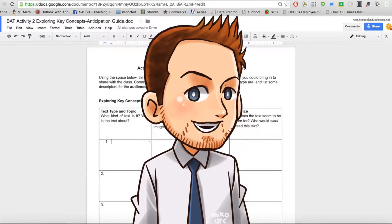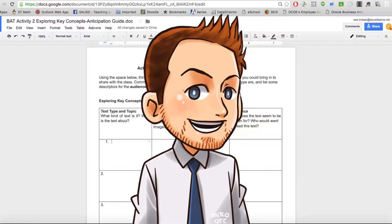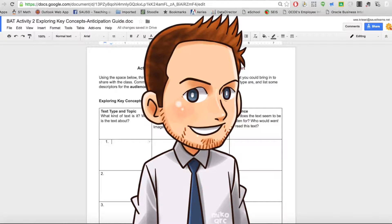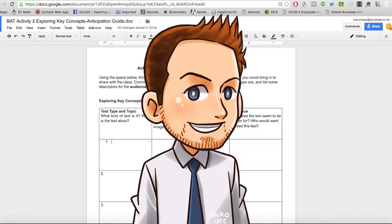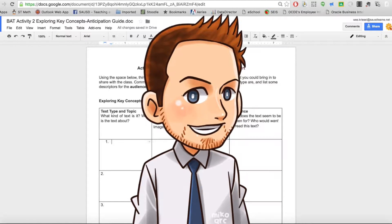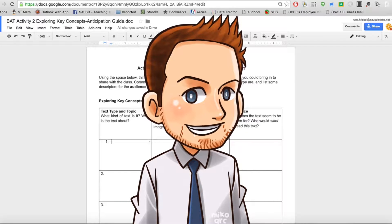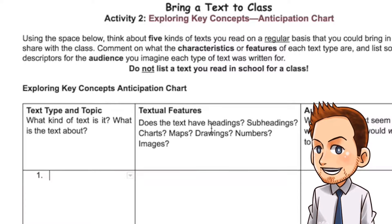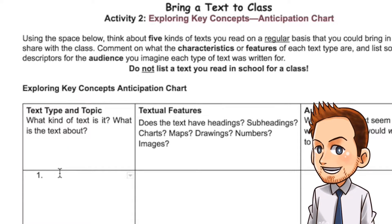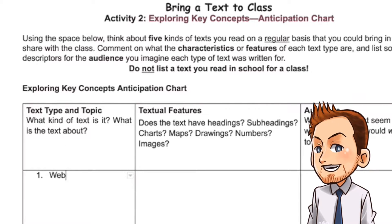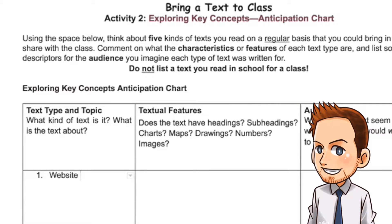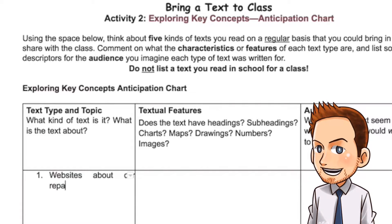Hi there. For activity 2 we're going to fill out this chart that helps you explore some features of the text that you most commonly read. On the left you'll see a column for text type and topic. For example, I might say I read websites about car repairs or fixing up cars.